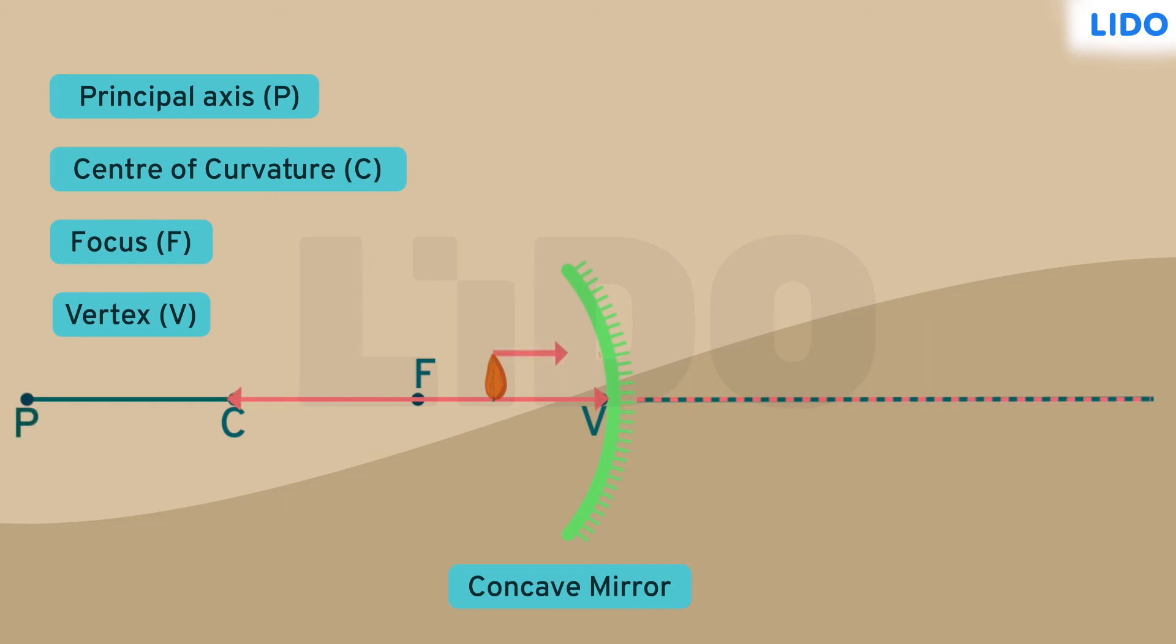The ray coming from the top is parallel to the principal axis and on reflection, it shall pass through the focus. Also, a ray from the top of the nut is incident on the pole of the mirror. This is reflected at the same angle. These two rays further meet at a point and the image is formed there.